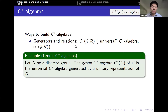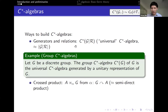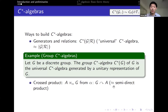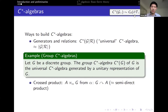Another way to build C*-algebras is using the crossed product construction. If you start with any group action on a C*-algebra, you can construct a bigger C*-algebra called the crossed product, which captures the group action through its relations. You can think of this as the C*-algebraic analog of the semi-direct product construction for groups. This is what's happening on the right-hand side: that C*-algebra is the crossed product coming from an action of the group G on the C*-algebra here.